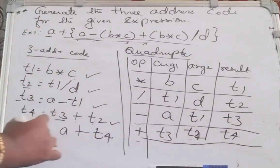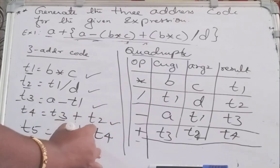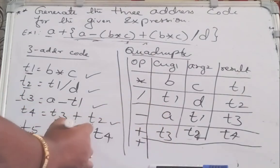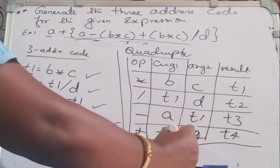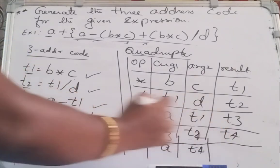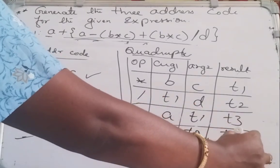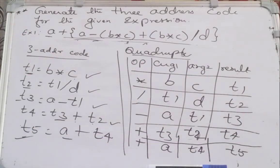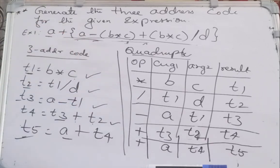The next instruction: the operator is plus, argument one is A, argument two is T4, and the result is stored in T5. So this is the quadruple representation of this three address code instruction. If they ask you to write the quadruple for the same three address code instruction, you have to construct the table like this. This is about the quadruples.